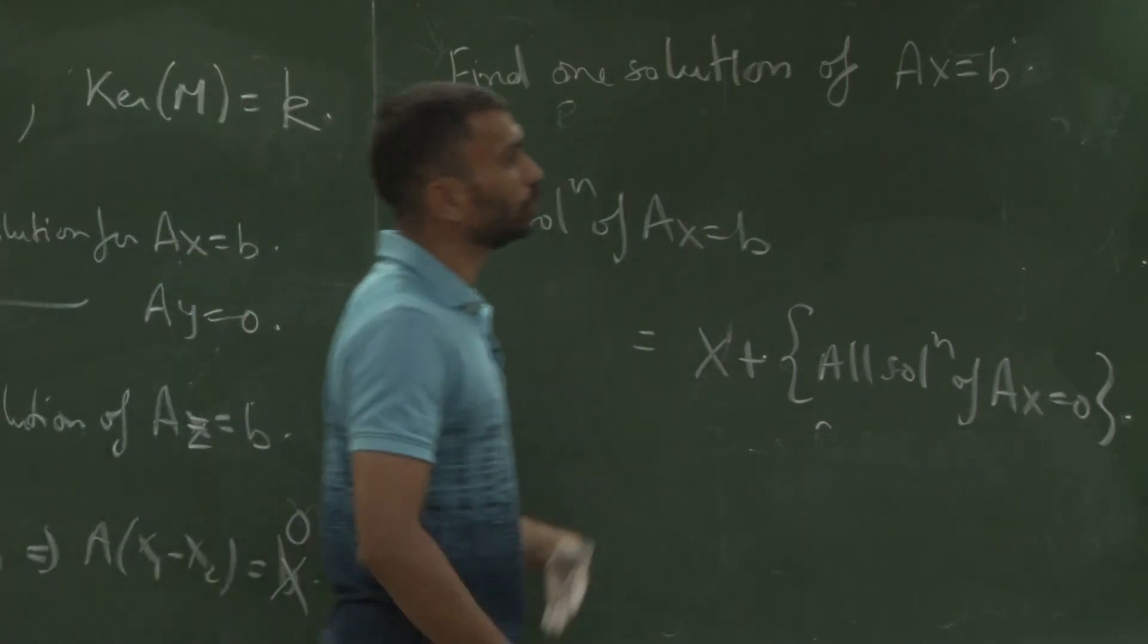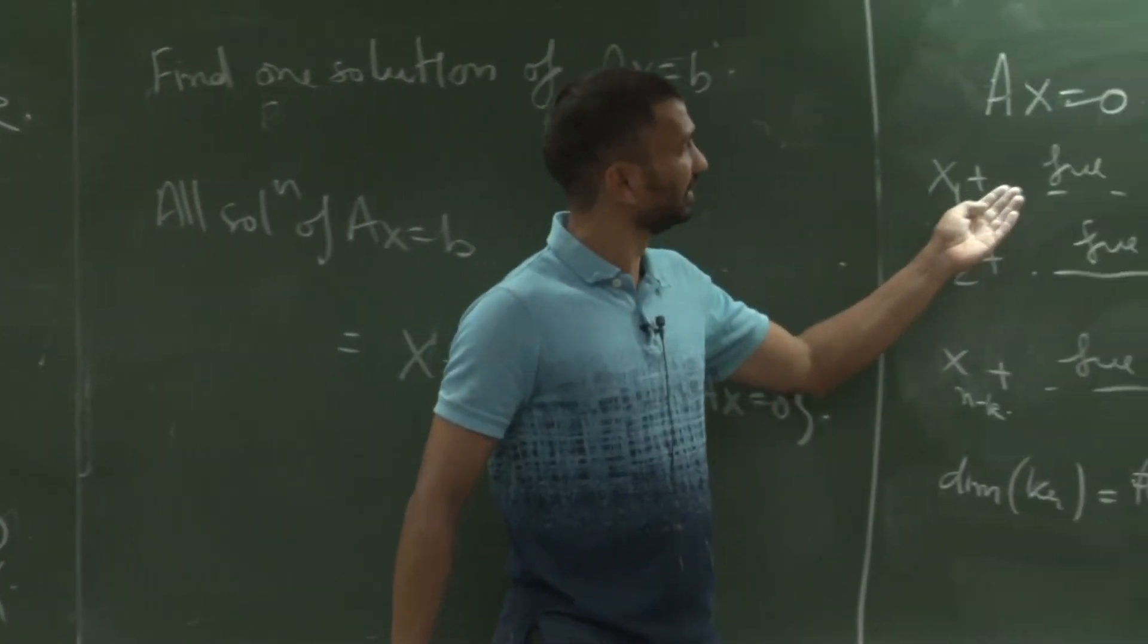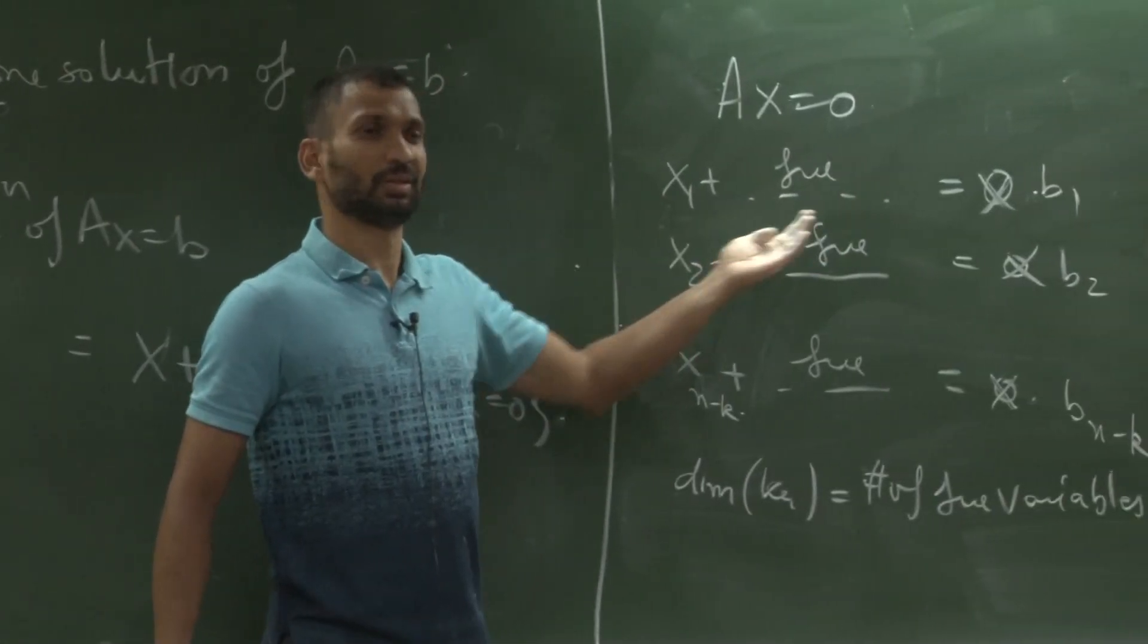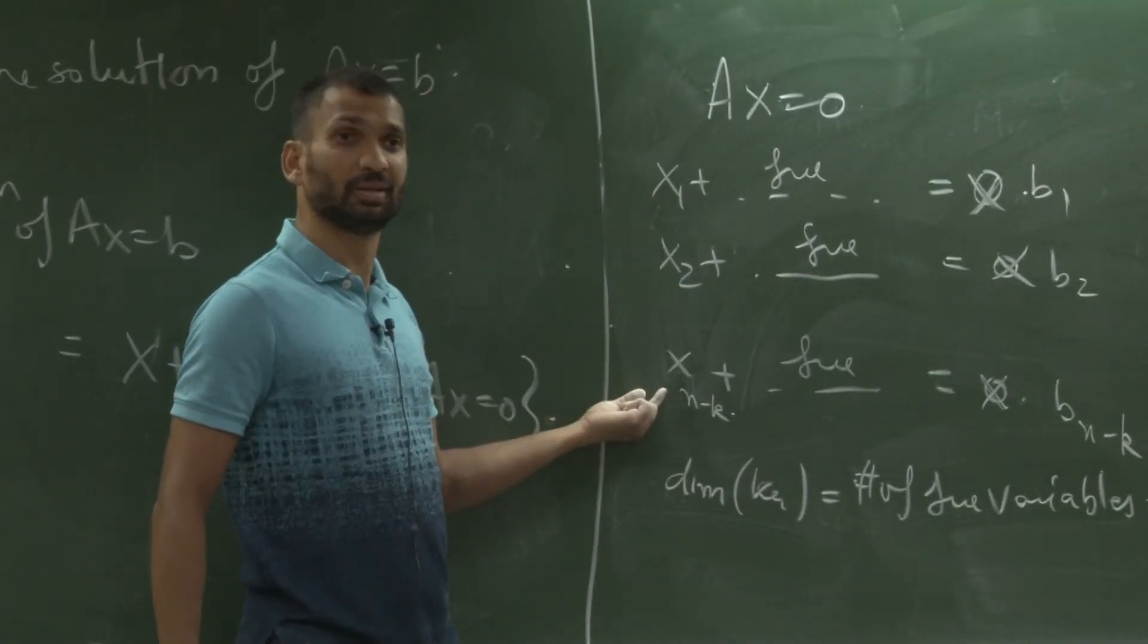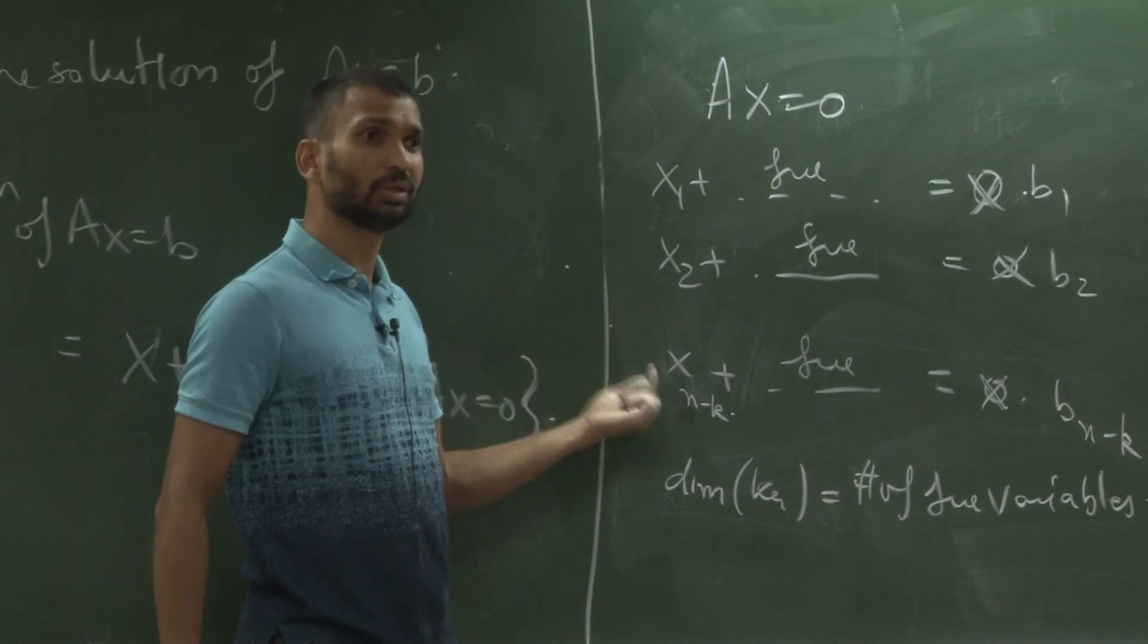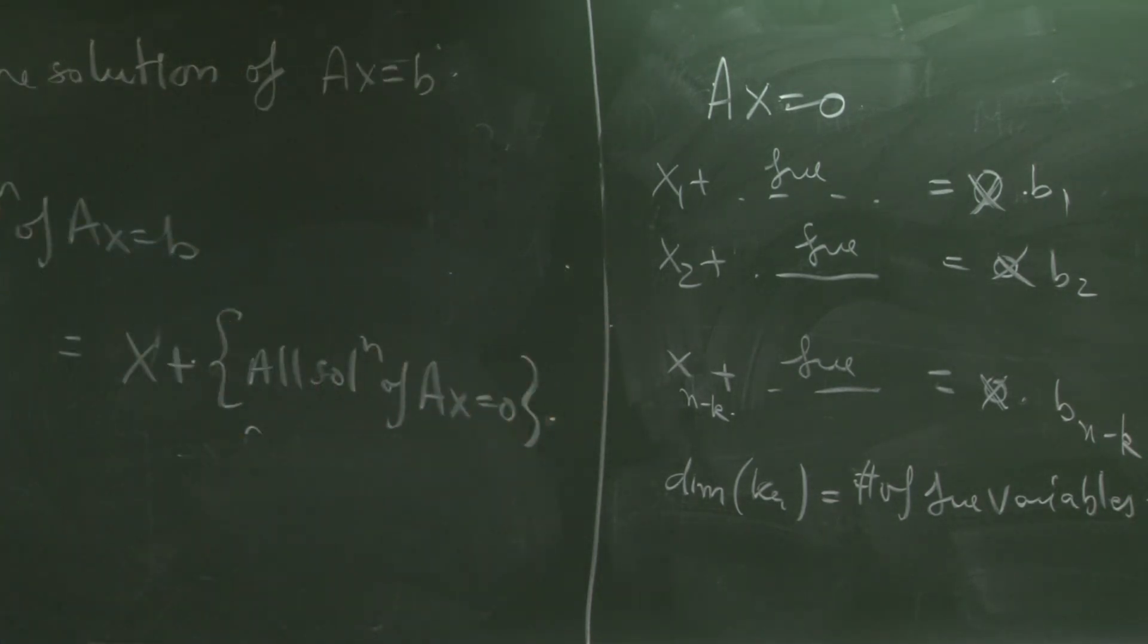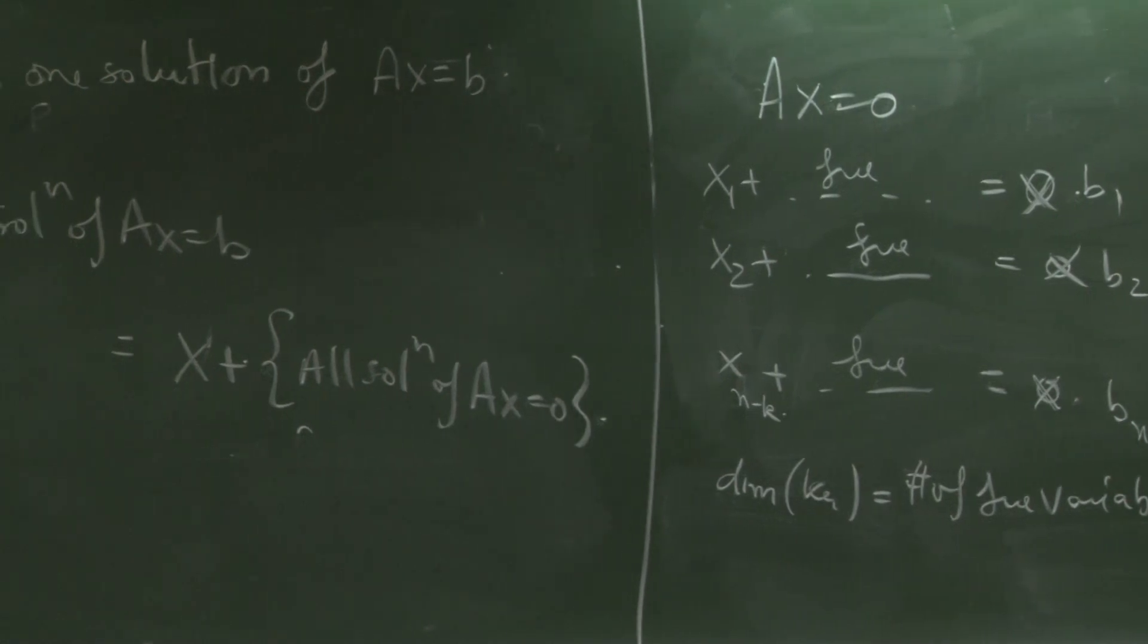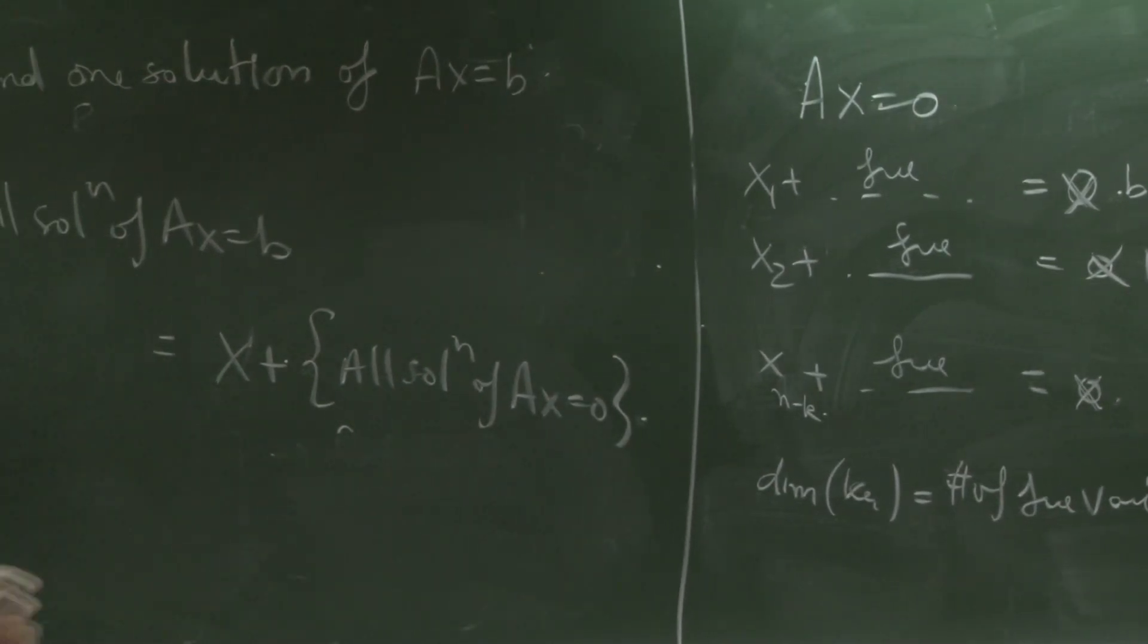And how do I, how do you pick one solution? Again, set the free variables, they will allow me to write something about the x1 to x n minus k.